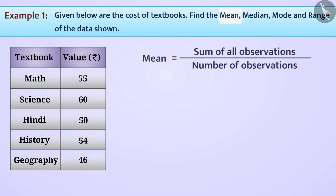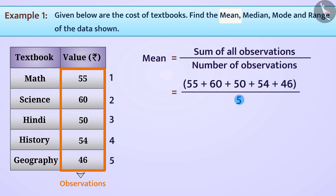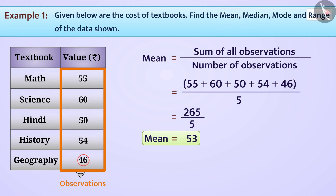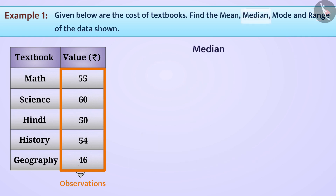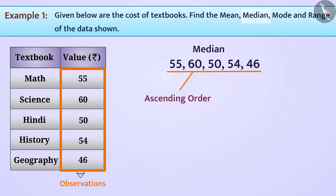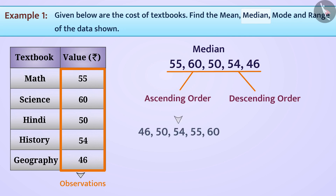Mean equals the sum of all observations divided by the number of observations. Using this formula, we can derive the mean of the values given in the table — the answer is 53. The range is derived by subtracting the smallest observation 46 from the largest observation 60, giving a range of 14. To find the median, we arrange the data in ascending order; the centermost value is 54, so the median is 54.